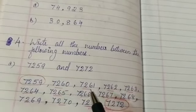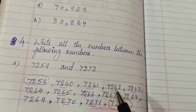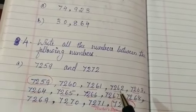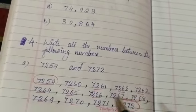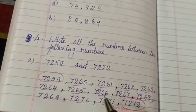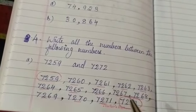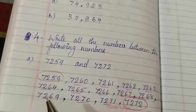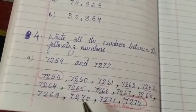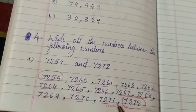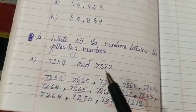60 becomes 61. Next is 62. So, 7262, like that. 63, next 64, 65, 66, 67, 68, 69, 70, 71, okay? Next number is 72 here.